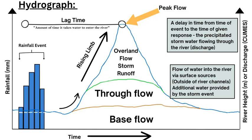The timing of when water reaches the river also dictates how fast it gets there based on its source. Through groundwater it arrives a bit quicker due to natural infiltration. Overland flow and storm runoff come in a bit later, as shown on the time axis, where overland flow is the last to arrive and causes that peak flow in the river, for any watershed, catchment area, or drainage basin.